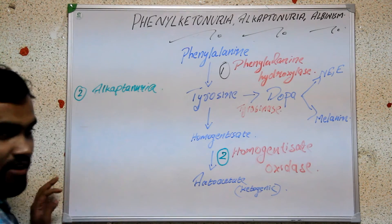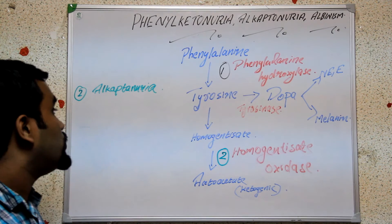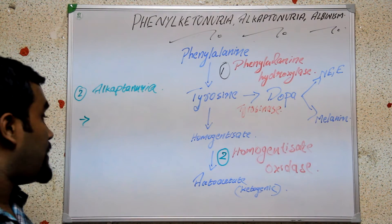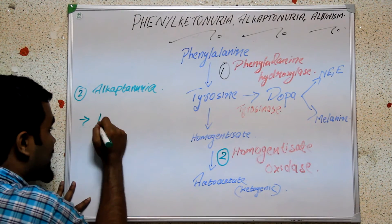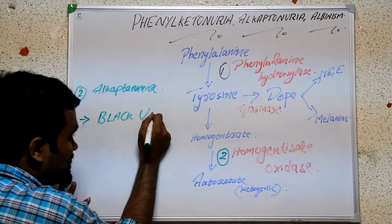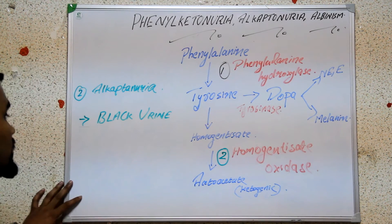From the word, we can define alcaptonuria - we can see alcaptone bodies in urine. What are the clinical manifestations? Mainly, clinical manifestations include black urine. Patients suffering from this disease will have black urine.